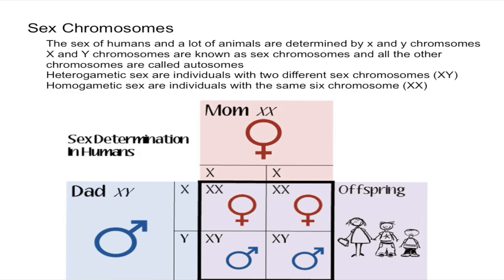The sex of humans, as well as a lot of animals, is determined by X and Y chromosomes. There are two types of chromosomes: sex chromosomes, which are the X and Y chromosomes, and autosomes, which are all of the other ones. In humans, the 23rd pair is the sex chromosome, and all of the other ones are autosomes.